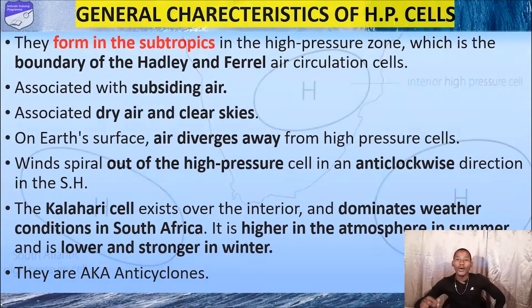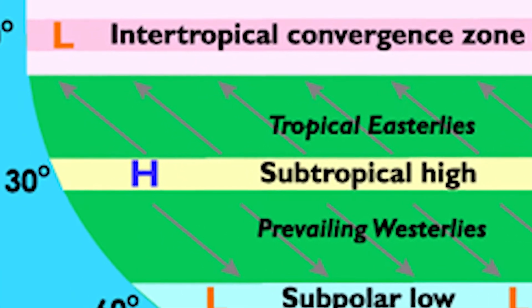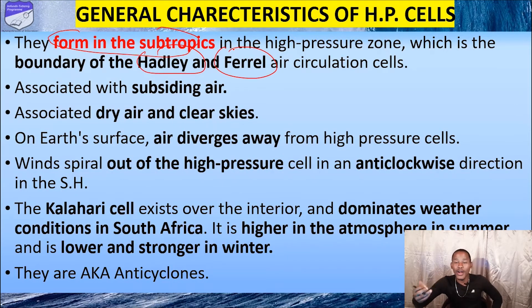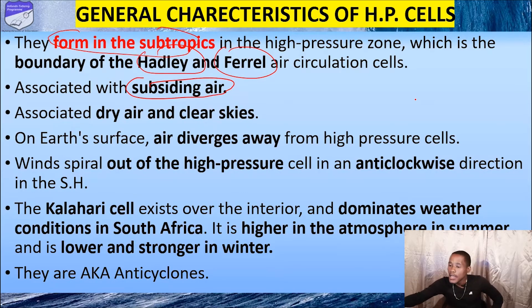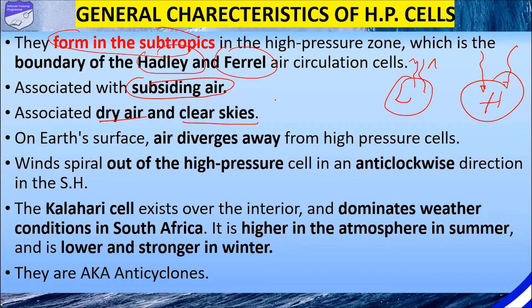Now let's explain the general characteristics of these anticyclones. They form in the subtropics in the high pressure zone, which means they're influenced by the 30-degree latitude — our subtropical high, the boundary of the Hadley and Ferrel cell. They are associated with subsiding air. With high pressure we have subsiding air because it's cold — subsiding means the same thing as sinking. They are also associated with dry air and clear skies, because there is no evaporation, the air is not rising, and no clouds are forming.